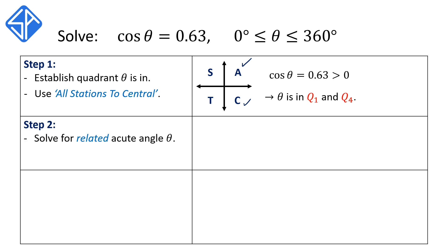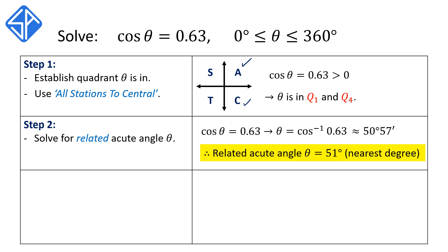The next step is to solve for the related acute angle theta. Using the calculator, theta is equal to inverse cos of 0.63, and this will give us approximately 50 degrees 57 minutes to the nearest minute. So our related acute angle theta will be 51 degrees rounded to the nearest degree.